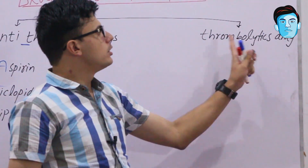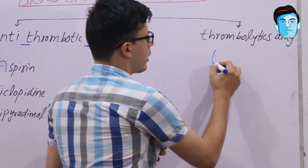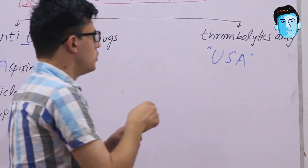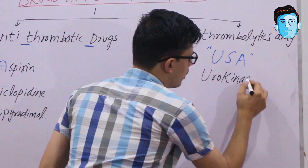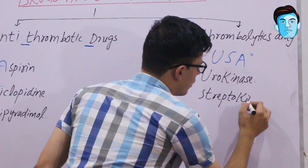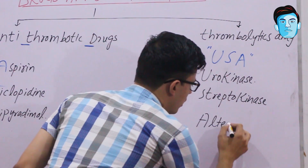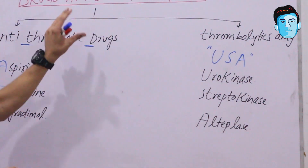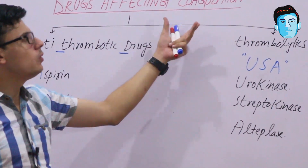Now let's talk about the thrombolytic drugs. These are the drugs that dissolve the already formed thrombus. For this class, we have a trick: USA. Where U stands for urokinase, S stands for streptokinase, and A stands for alteplase.